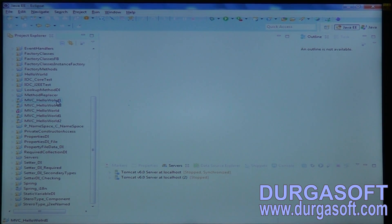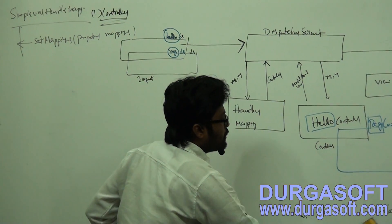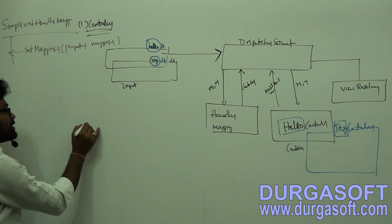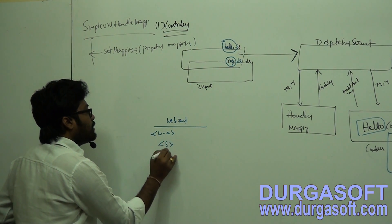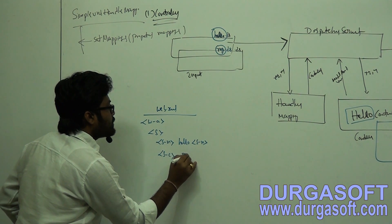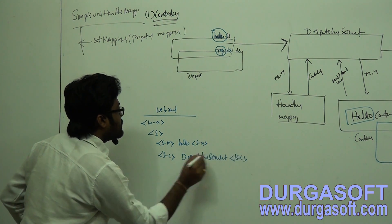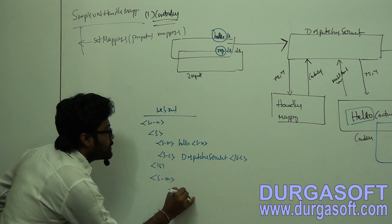What about that XML file name? We must need to configure the servlet name hyphen servlet.xml file in web.xml file while configuring the dispatcher servlet. If you use any servlet name for your dispatcher servlet in web.xml file, for example if your servlet name is 'hello', then the servlet mapping servlet name should be 'hello'.